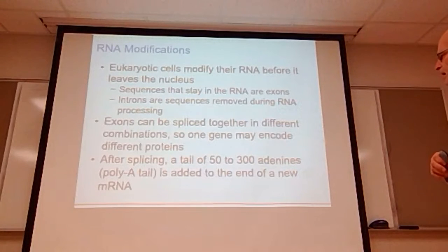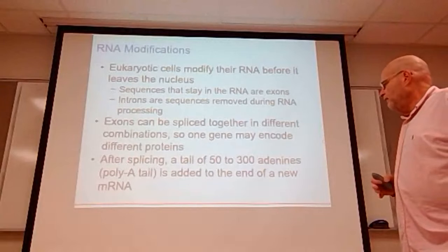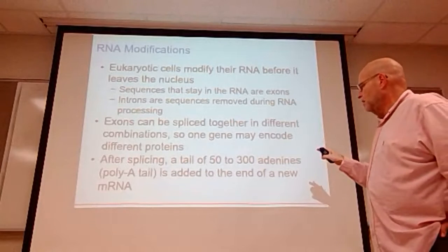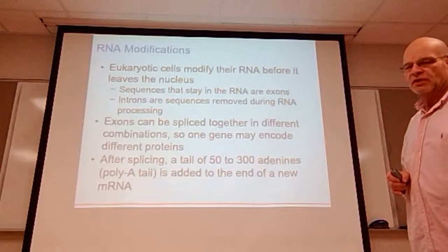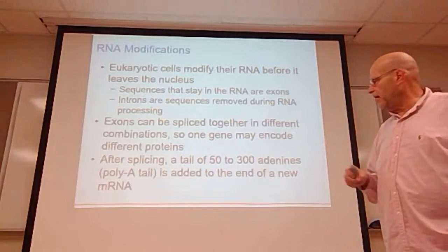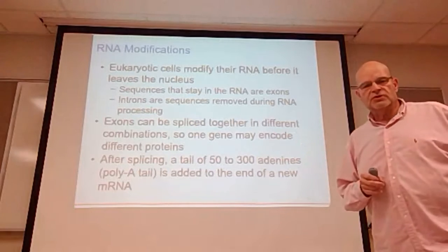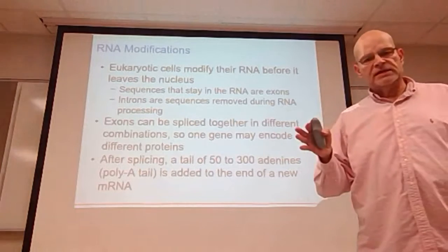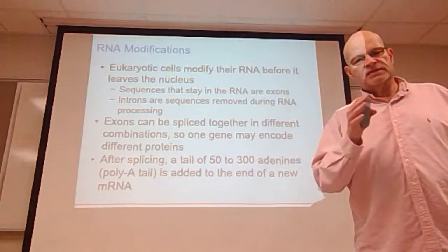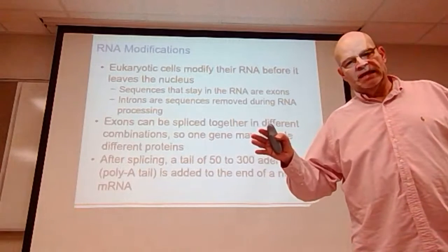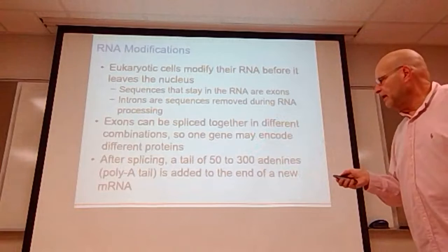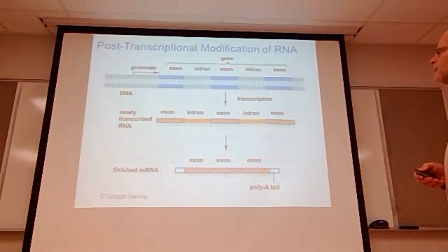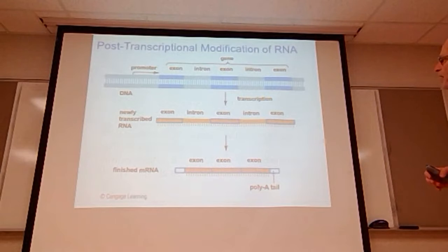After splicing, a tail of between 50 to 300 adenine molecules — referred to as a poly-A tail — is added to the end of the new messenger RNA. That ensures the stop process is continuous; it makes a whole bunch of adenines at the tail end, which will end translation.